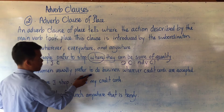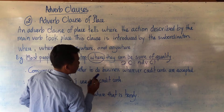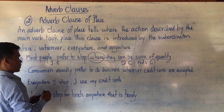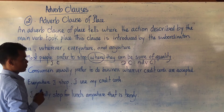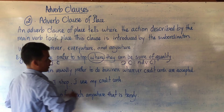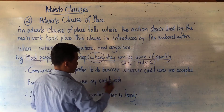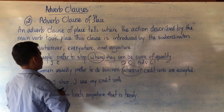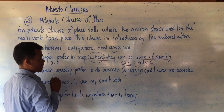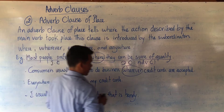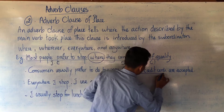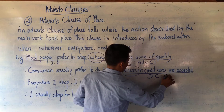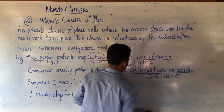Number two: 'Consumers usually prefer to do business wherever credit cards are accepted.' The subordinator here is 'wherever,' which refers to any place. From 'wherever' to 'accepted' is the Dependent Clause (DC) — this DC is an Adverb Clause of Place.